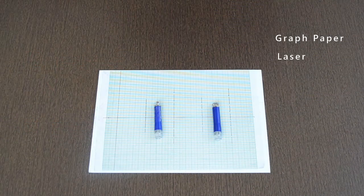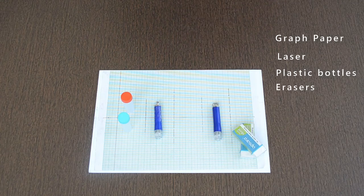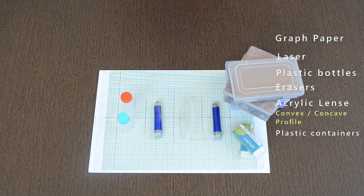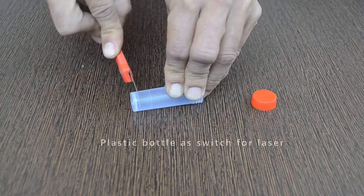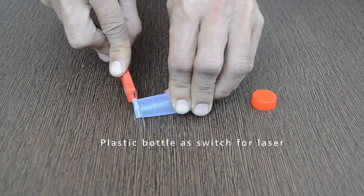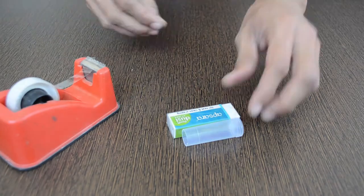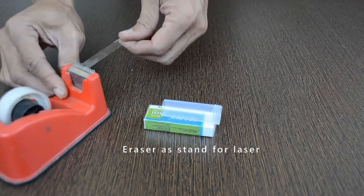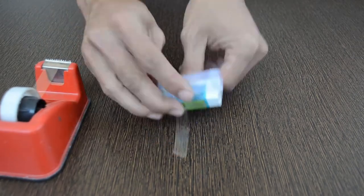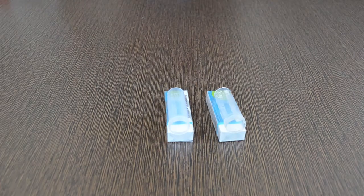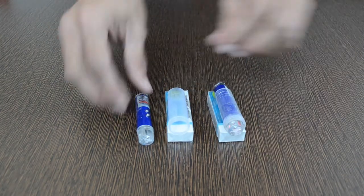In this case, we will use graph paper for this activity. To avoid keeping the switch of laser light pressed for long duration, I have used a plastic bottle. An eraser acts as a stand for the laser. The laser remains on as long as it is pressed inside the bottle.